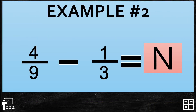Let's try another example, number 2. I have 4 over 9 minus 1 over 3 equals N. Again, we're going to find out what the value of N is.